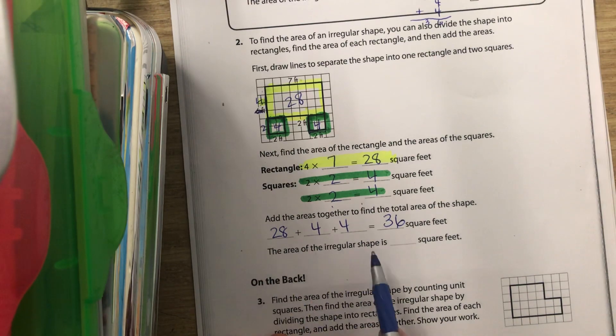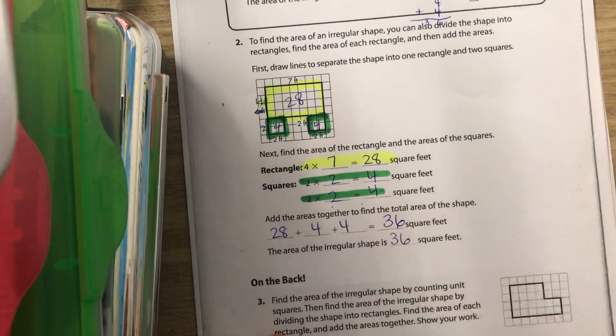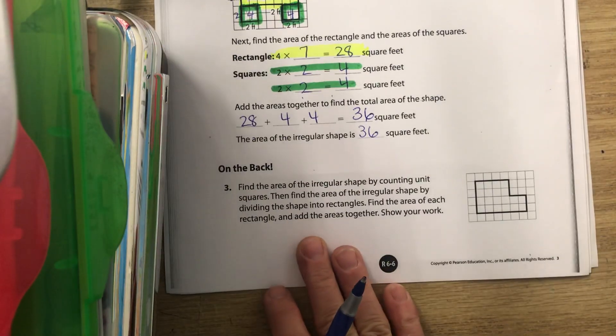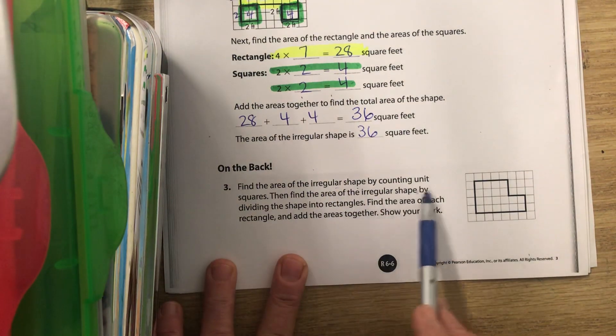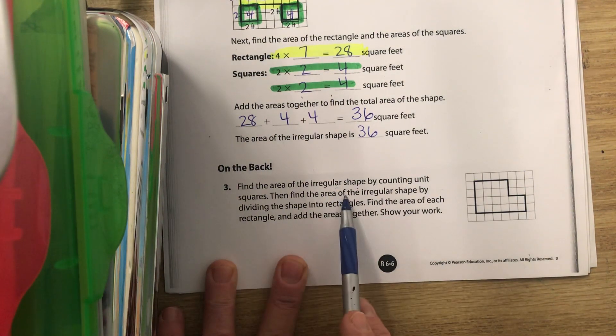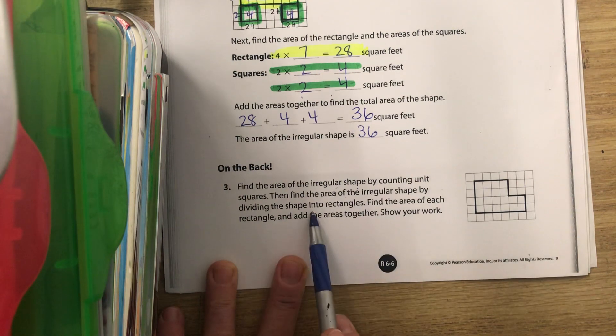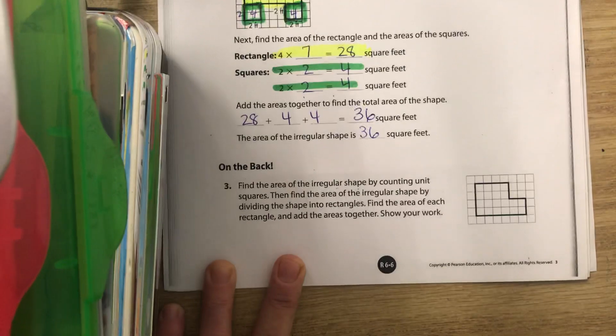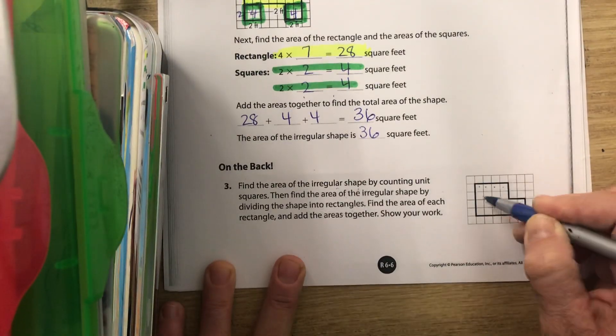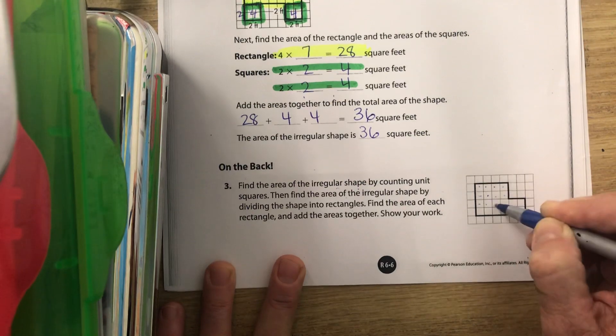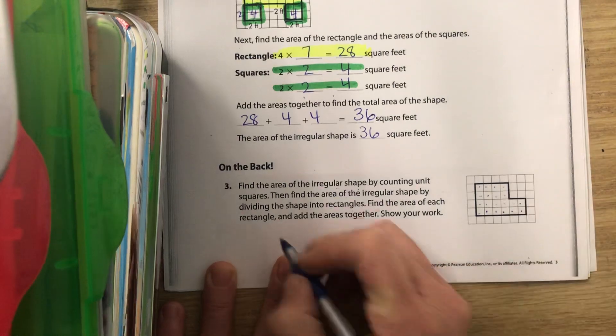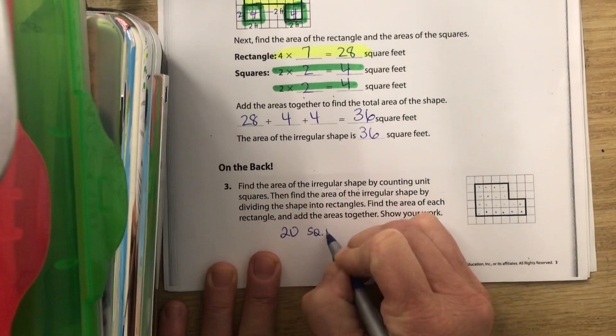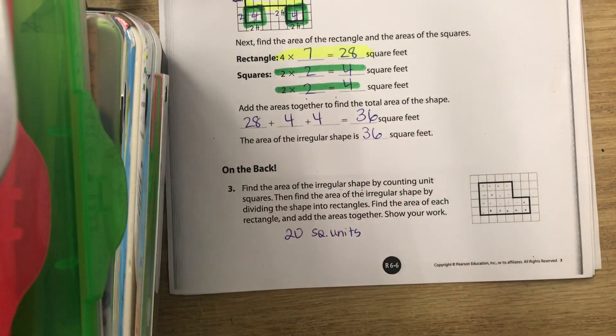Let's take a look at this one right here. It says on the back, but we can do it right here. Find the area of the irregular shape by counting unit squares, then by dividing the shape into rectangles. So first what they want us to do is count: 1, 2, 3, 4, 5, 6, 7, 8, 9, 10, 11, 12, 13, 14, 15, 16, 17, 18, 19, 20. So we know it's 20 square units, but we know that's super easy to make a mistake on when we're counting like that.